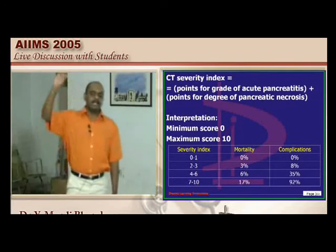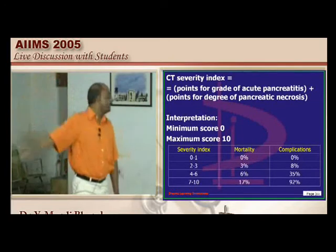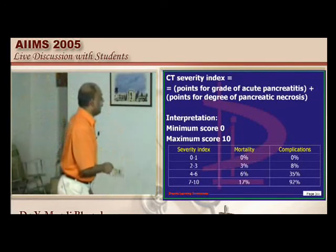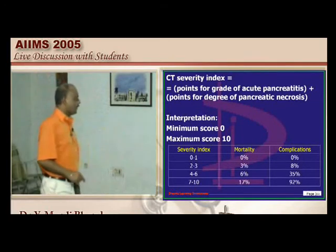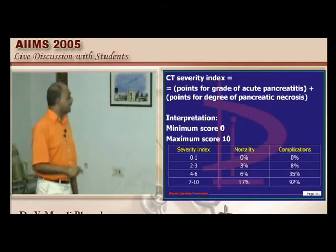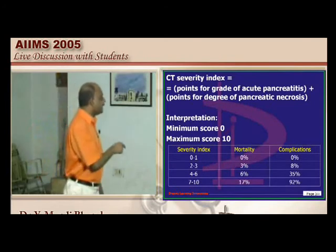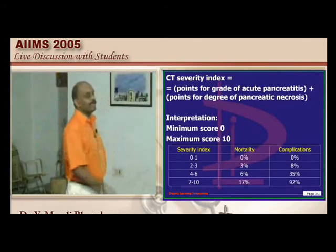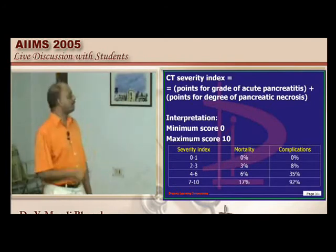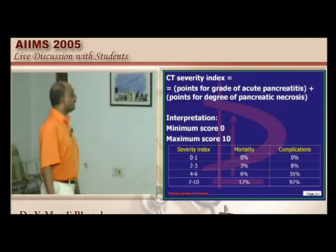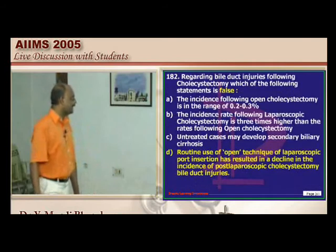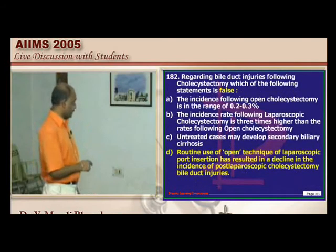Summary: Glasgow scale, APACHE score greater than 9, CT score greater than 6 — remember 3, 6, 9 in relation to acute pancreatitis.